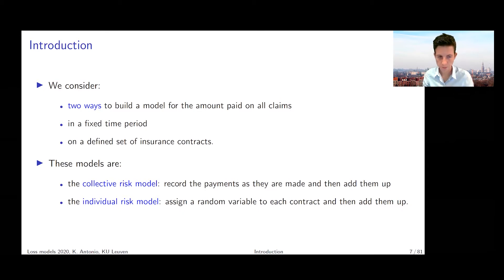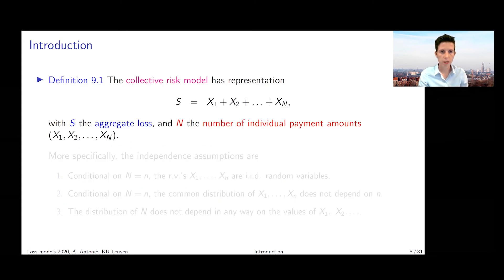Let's see how these two work. If you look at the collective risk model, it has the following representation. You look at the total loss S, the aggregate loss. We're going to model it with a compound sum random variable, so we're going to write it as X₁ + X₂ + ... + Xₙ, where N is referring to the number of events with a payment, the number of individual payment amounts or the number of insured events leading to a payment that is different from zero.